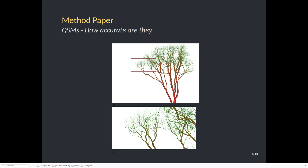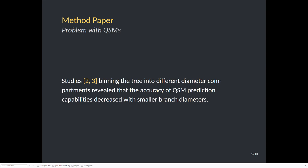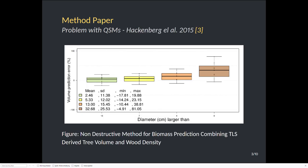Indeed, there have been earlier studies done which measured the tree with a laser scanner and also measured the tree destructively. The tree was binned into different diameter compartments, so the researchers could check the accuracy of different diameter classes. The studies showed that the smaller the diameter is, the more the QSM cylinders overestimate the volume.